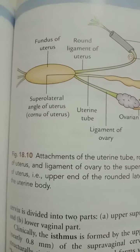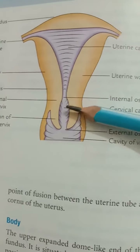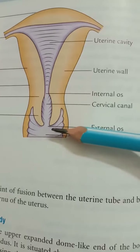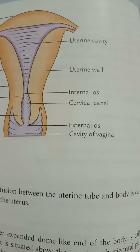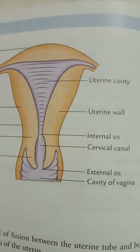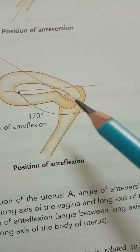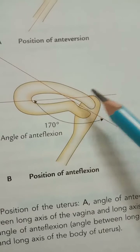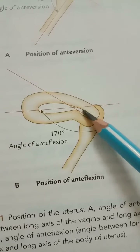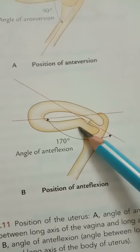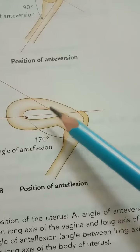The cervix is the lower cylindrical part, and its lower portion projects into the upper part of the vagina. The cervix is divided into two parts: the supravaginal part and the vaginal part. The portion of the cervix present inside the vagina is the vaginal part, and the upper portion outside the vagina is the supravaginal part. Clinically, the isthmus is formed by the upper one-third of the supravaginal cervix.